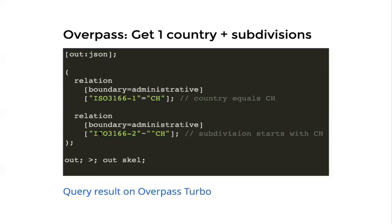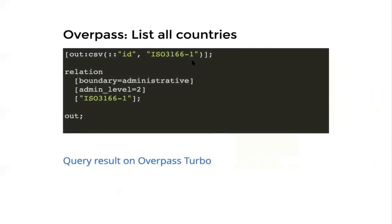Now that we solved this for one country, the obvious question is how do we do this for all countries? One way could be to find somewhere a list of all ISO codes for the countries and then run this in a loop. But that's not even necessary, because we can just ask the Overpass API again — it also allows us to query all the relations at admin level 2, which is the country level, and gives us the ID and the two-letter country code for them.